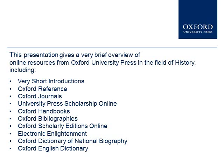This presentation gives a very brief overview of online resources from Oxford University Press in the field of history, including Very Short Introductions, Oxford Reference, Oxford Journals, University Press Scholarship Online, Oxford Handbooks, Oxford Bibliographies, Oxford Scholarly Editions Online, Electronic Enlightenment, Oxford Dictionary of National Biography, and the Oxford English Dictionary. The presentation will take about 10 minutes.